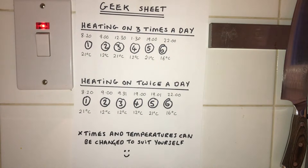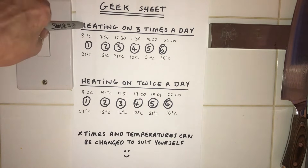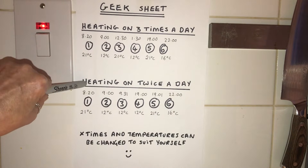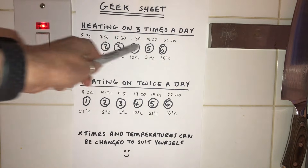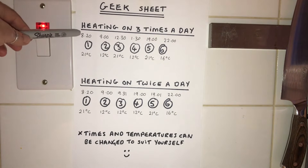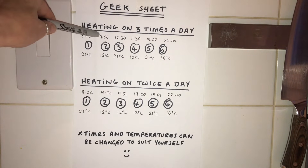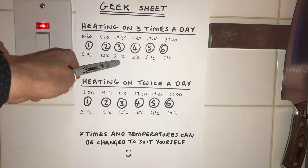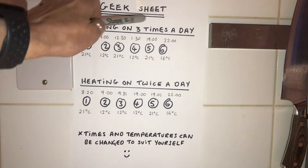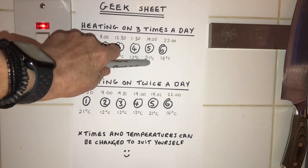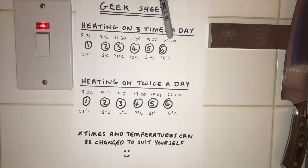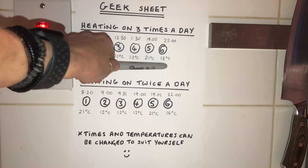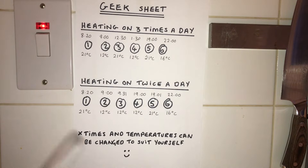Being an engineer, I've drawn up a Geek Sheet. It looks complicated but it's not, and it will become really apparent once you start to program the thermostat. There are generally two scenarios in houses: one where you heat three times a day, and one where you have the heating on twice a day. If you heat three times a day — remember there's on and off, six on/off slots per day — for example on Monday, it comes on at 8:20 at 21 degrees. When you leave for work at 9 o'clock it drops to 12 degrees. When you come home for lunch at 12:30 it goes back to 21. When you leave at 1:30 it drops to 12. When you come back at 7 o'clock it goes to 21 degrees. And when you go to bed at 10 o'clock you want a comfortable ambient 16 degrees Celsius.